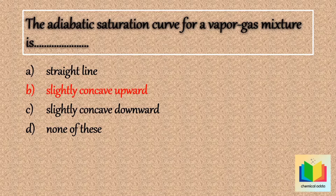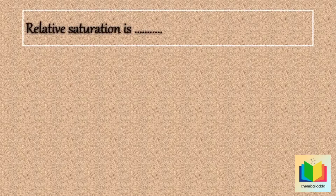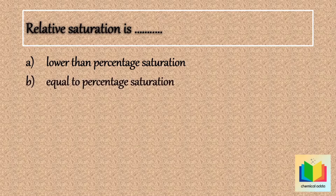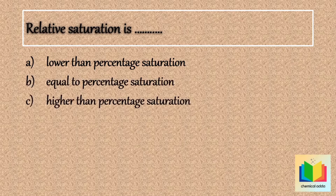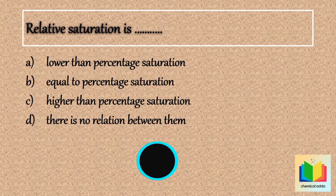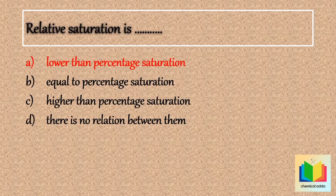Next question: relative saturation is — option A: lower than percentage saturation, option B: equal to percentage saturation, option C: higher than percentage saturation, option D: there is no relation between them. The answer is option A: lower than percentage saturation.